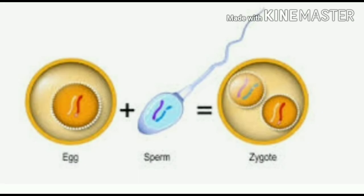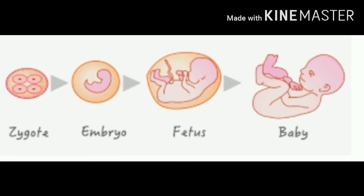During sexual reproduction, two types of gametes are formed. During the fusion of gametes, there is recombination of genetic material from the two parents. This leads to greater variation in the offspring. As the offspring gets more variations, it is more likely to adjust better to environmental fluctuations.